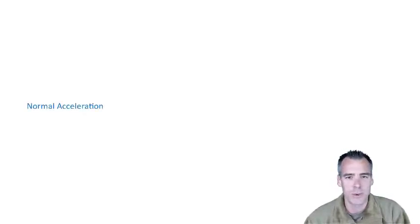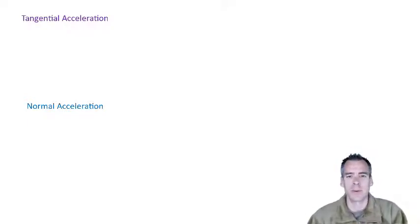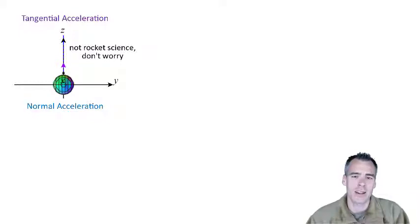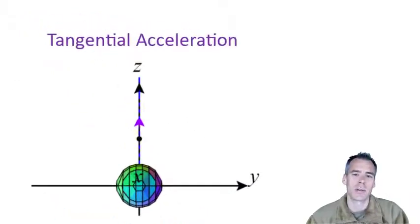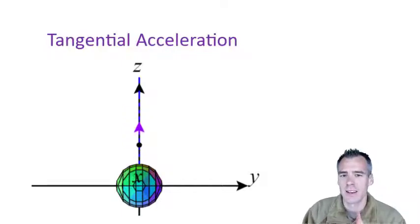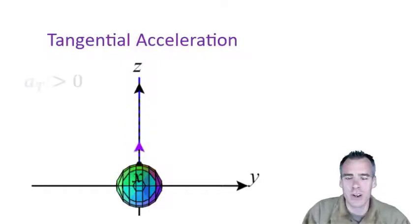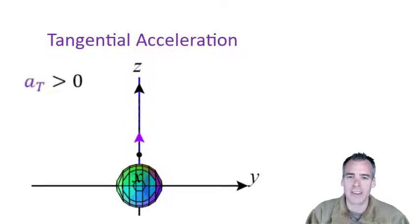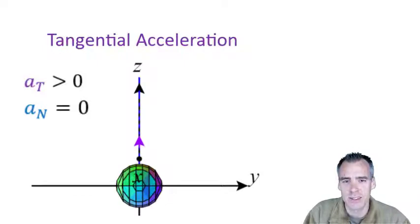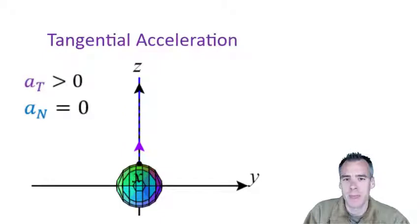We're going to break down acceleration into its normal and tangential components. To start off, let's consider a really simple example: a rocket launching from the earth straight upward. Since that acceleration upward is going in the same direction that the rocket is launching, the acceleration and the tangent vector are going to be the same direction. Therefore, this is going to have a very strong tangential component of acceleration. And since it's going straight up and not turning at all, its normal component of acceleration will be zero.